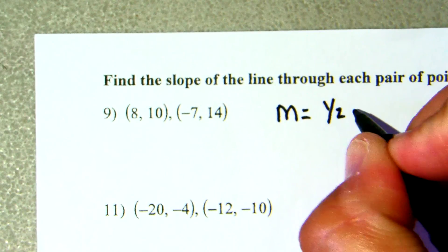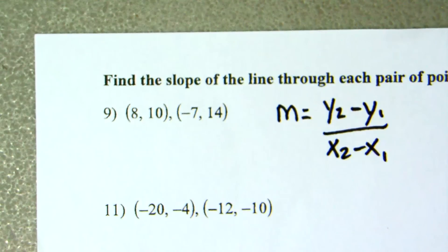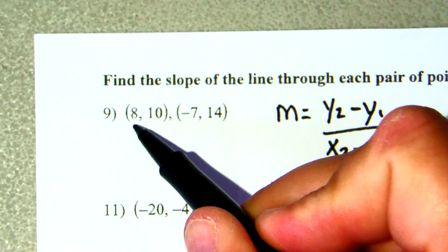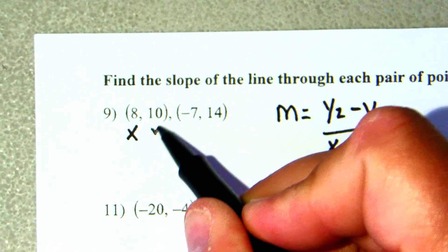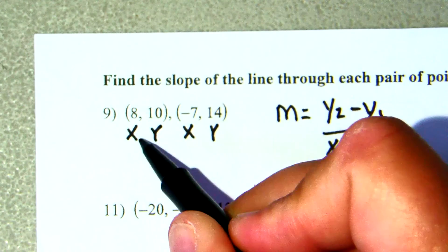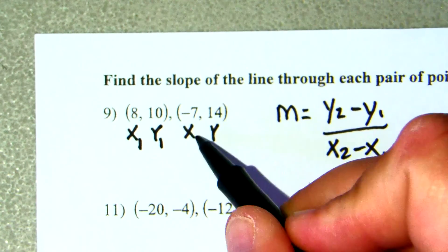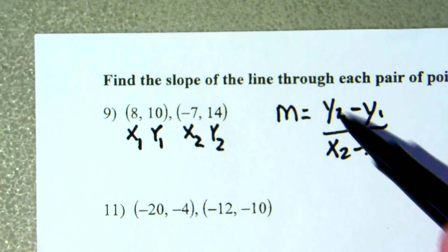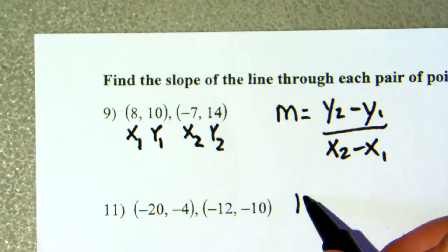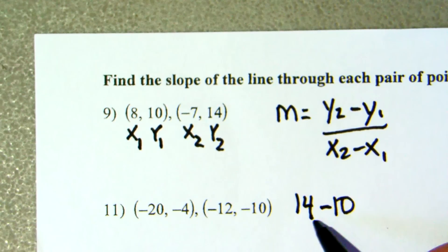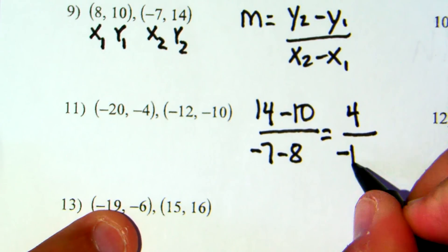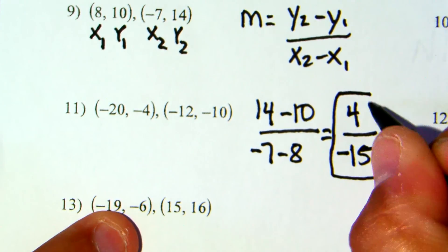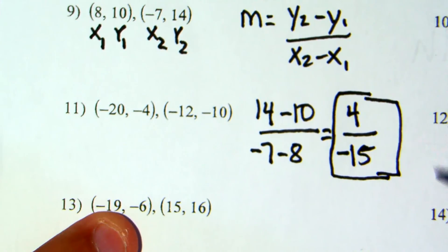I'm going to give you this formula on the test: m, which stands for slope, equals y2 minus y1 over x2 minus x1. Label your points — the first point is (1, 8) and the second point is (-7, 14). Plug into the formula: 14 minus 10 over negative 7 minus 8. That gives 4 over negative 15, so the slope is negative four-fifths. You can reduce or not.